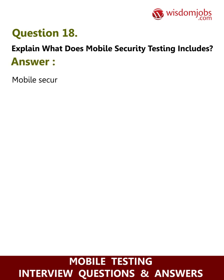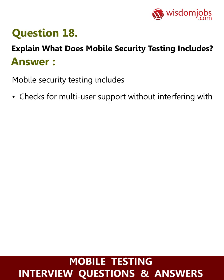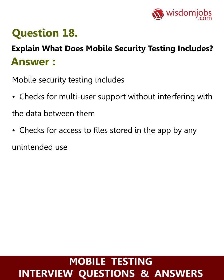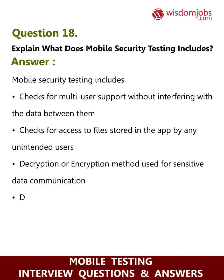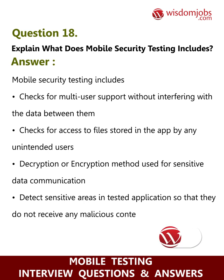Question 18: Explain what mobile security testing includes. Answer: Mobile security testing includes checks for multi-user support without interfering with data between users, checks for access to files stored in the app by any unintended users, decryption or encryption methods used for sensitive data communication, and detects sensitive areas in tested applications so that they do not receive any malicious content.